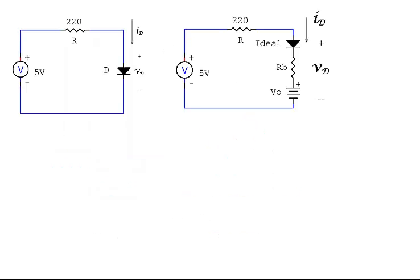As before, the model replaces the actual diode in the circuit to be analyzed. In this example, the turn-on voltage is 0.5 volts, and the diode's body resistance is 5 ohms.